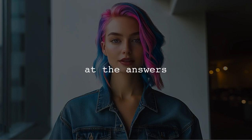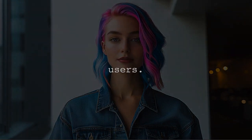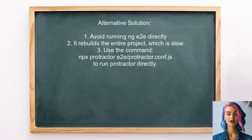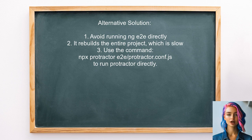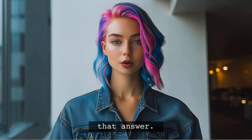An alternative approach suggested by a user is to avoid running NG E2E directly, as it can be slow due to rebuilding the entire project each time. Instead, they recommend using the command npx protractor e2e/protractor.conf.js to run Protractor directly.